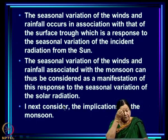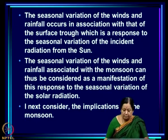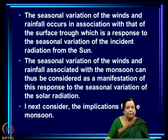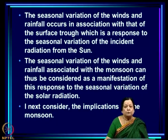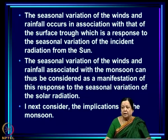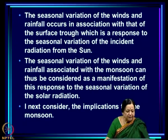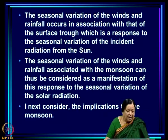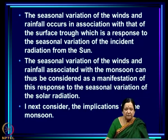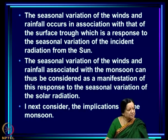We have looked at how tropical circulation arises due to incident solar radiation being maximum at the equatorial region and decreasing poleward in either hemisphere. We have also noted that this incident radiation varies with season — there is maximum incident radiation in the northern hemisphere during northern hemispheric summer and maximum in the southern hemisphere during southern hemispheric summer.